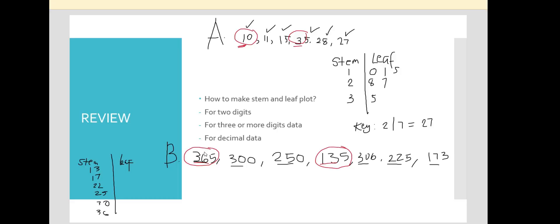306 goes to stem 30, leaf 6. 225 goes to stem 22, leaf 5. 173 goes to stem 17, leaf 3. Don't forget the key whenever you make a stem and leaf plot — for example, 17 | 3 = 173.